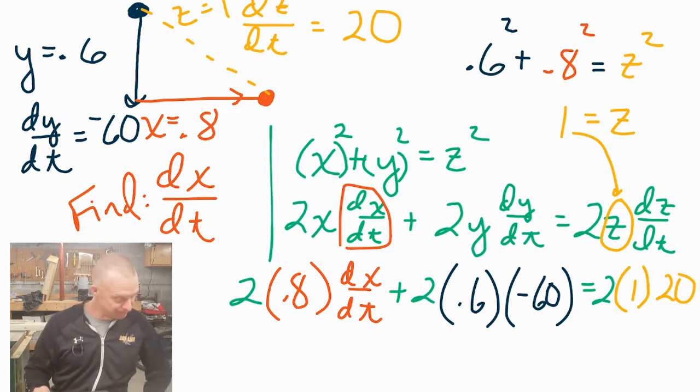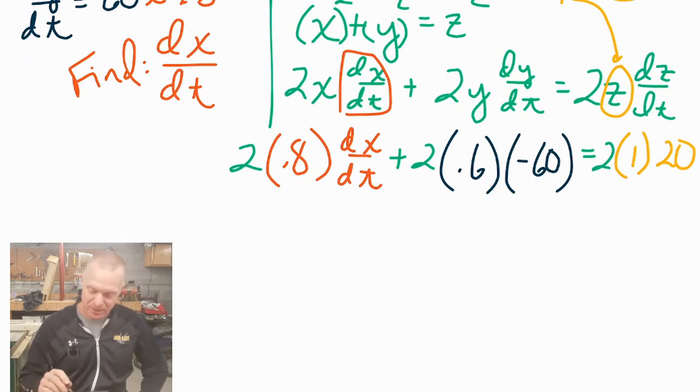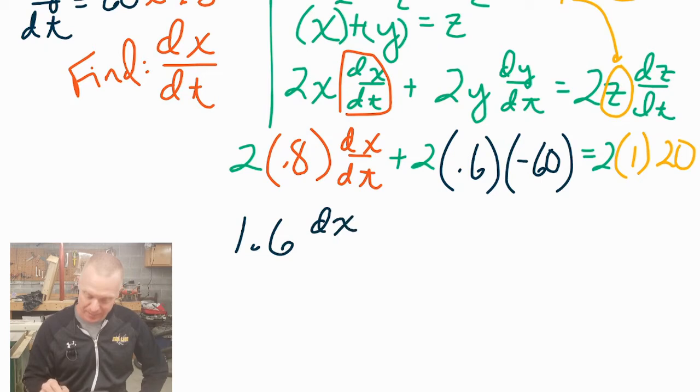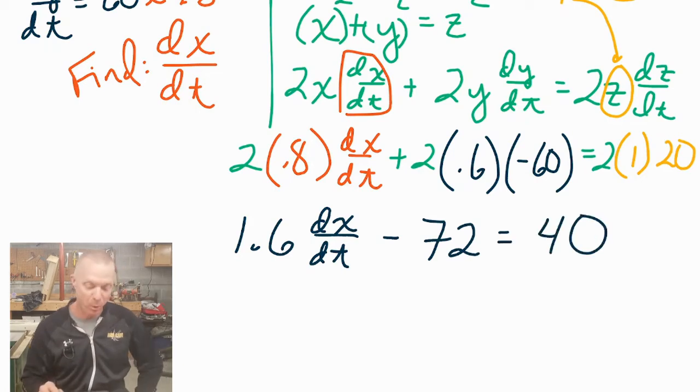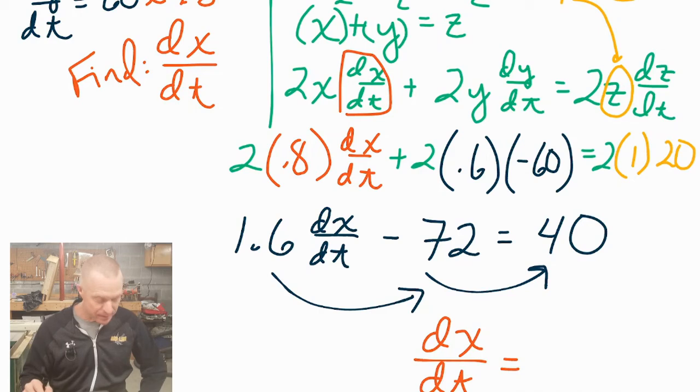So it's time to solve for DX DT. Not a really hard equation. I'm just looking at my notes here. It looks like, yeah, that's going to come out to 1.6. When you multiply these, you're actually going to get a negative 72, it appears. And over here we can do that math. That comes out to be 40. As you continue to solve the problem, you find out that the negative kind of gets added away. So that's good. And then we'll divide both sides by 1.6. So we end up with DX DT. That's what we were trying to find, equaling 70.